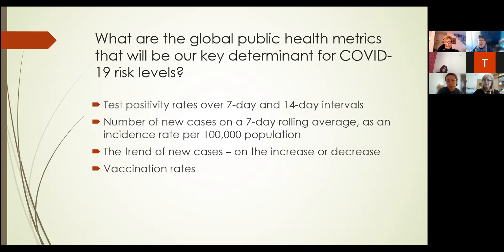Once we narrow down to approved destinations, we're going to take a deeper dive and look at what we're calling the tripwire metrics. We will be doing a weekly assessment of four criteria: the seven-day and 14-day interval positivity rates, the number of new cases per 100,000 population over seven days, and the percentage trend in new cases — whether they're increasing or decreasing. For example, a test positivity rate we generally want around 5%; if it's lower that's great, if it's higher that raises alarms.